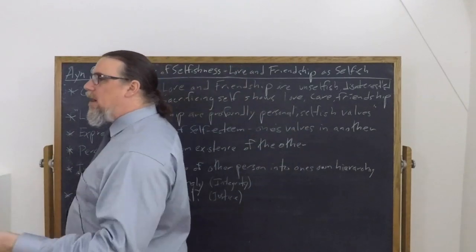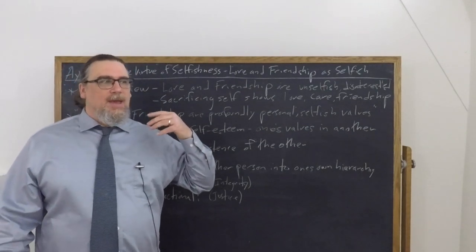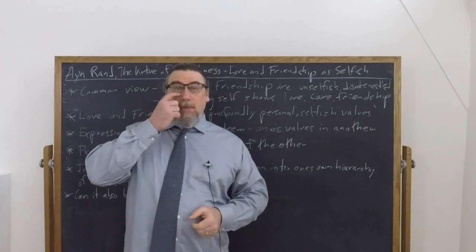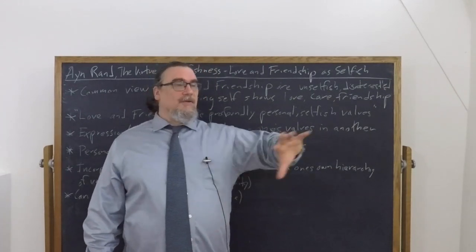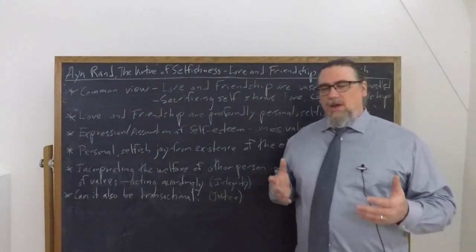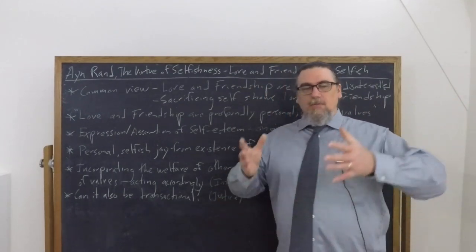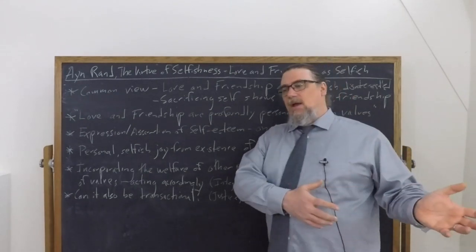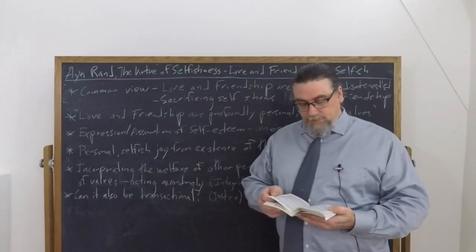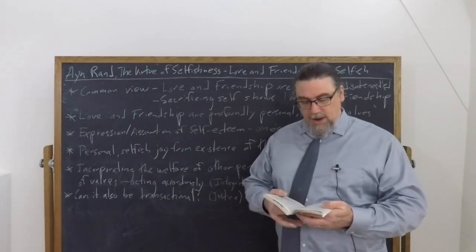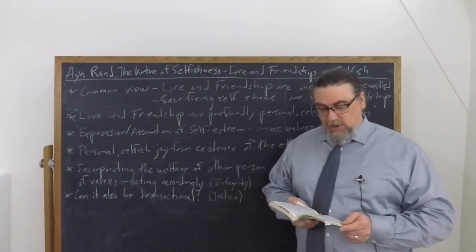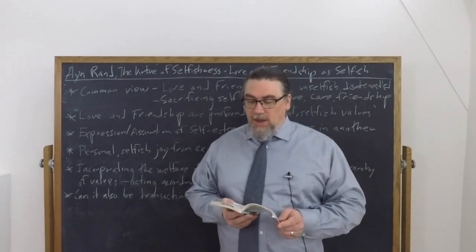Now this raises, of course, the question, well what about if you were to be called upon to do some action that is going to impinge on your own interests and it's going to be for the person who you love and you're never going to see that person again, they're going to be off in another country and you're not going to be able to go there. Should you do that? And Rand would say yeah, I mean that's where in the ethics of emergencies, the more you value the person, the more you will in fact be willing to risk, not because you have a duty to do so, but because that's an expression of what she calls integrity. So she goes a little bit later on. She says the virtue involved in helping those one loves is not selflessness or sacrifice, but integrity. Integrity is loyalty to one's convictions and values. It's the policy of acting in accordance with one's values, translating them into practical reality.